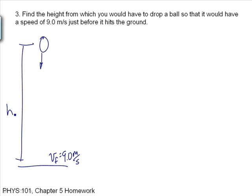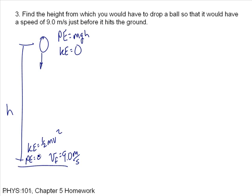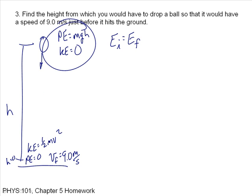We did this with free-fall problems, but it's much easier to consider the energy of the ball. At the top of the trajectory, the potential energy equals mgh, and the kinetic energy is zero because you're dropping it from rest. At the bottom, the kinetic energy is at its max and equals one-half mv squared, but potential energy equals zero because the height is zero. So the initial energy must equal the final energy, giving mgh equals one-half mv squared.